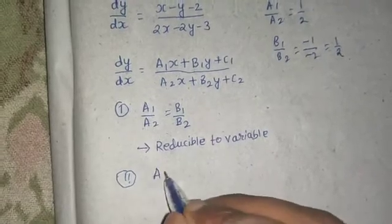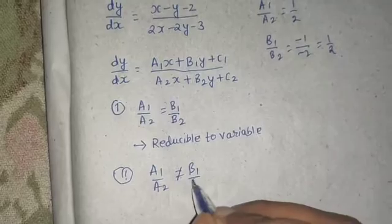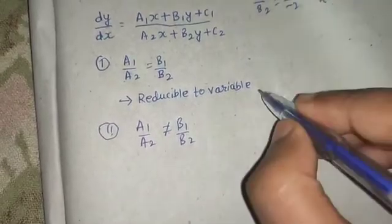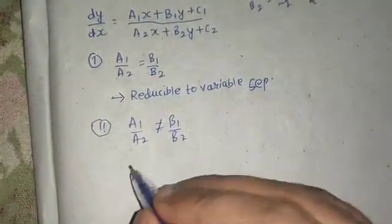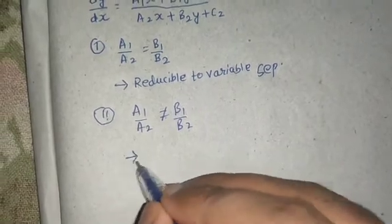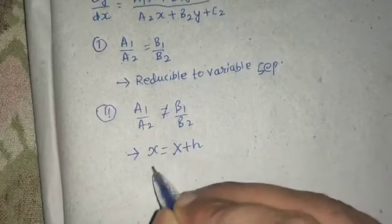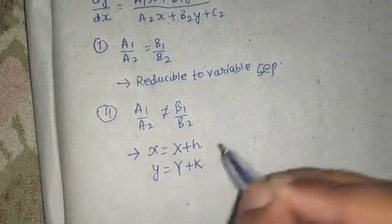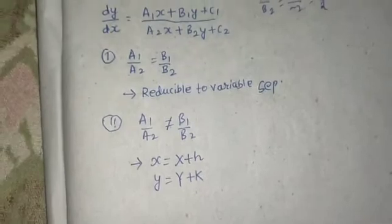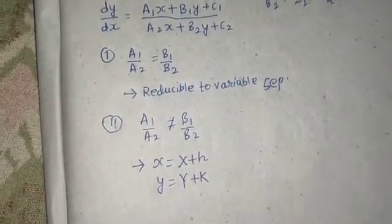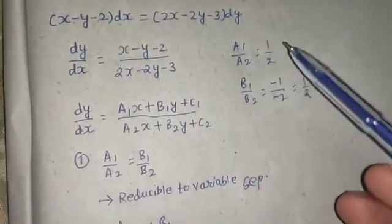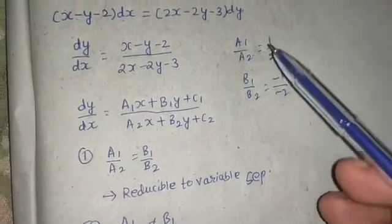Let's briefly discuss Case 2, where a1/a2 is not equal to b1/b2. In that case it is reducible to homogeneous, and homogeneous further reduces to variable separable. In this case we take x as capital X plus h and y as capital Y plus k, find the values of h and k, then reduce to homogeneous and solve. I have discussed many problems on this case — you can check my ordinary differential equation playlist.